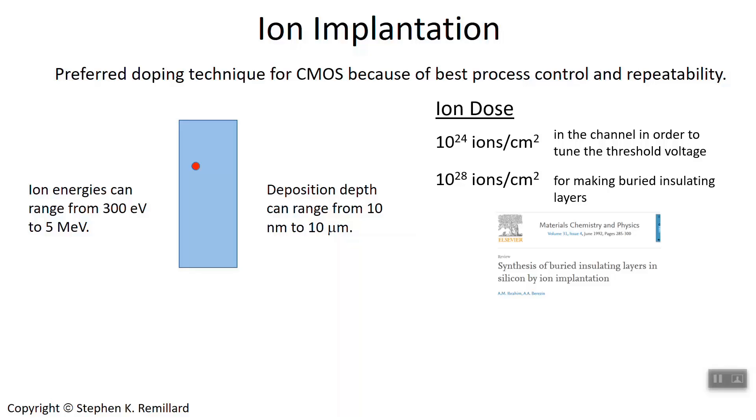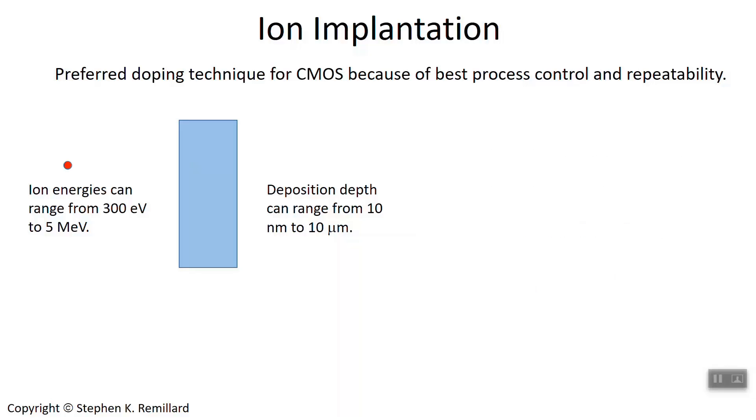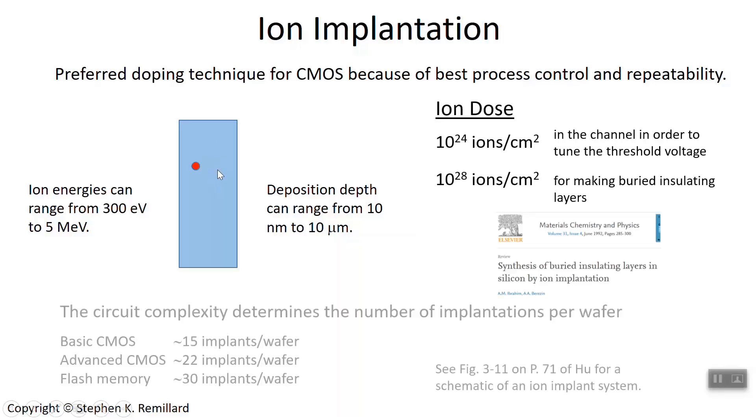You saw the animation—the ions have a stopping place. It depends on how high their energy is. The higher the energy, the deeper inside they are before they stop. So you can control where you put that internal layer by controlling the energy.